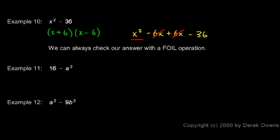Example 11: 16 - a². Think of this in your mind as 4² - a². So there's two things squared and we have the difference of those two things. So 4² - a² will factor as (4 + a)(4 - a). If you wanted to flip this around to write the variable first, you could—that would be fine.